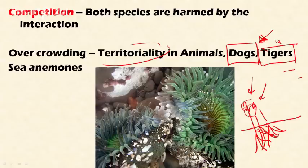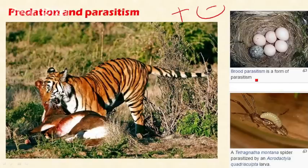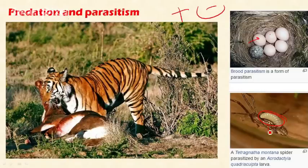Competition is also seen in sea animals, as shown in this figure. In predation and parasitism, one species benefits and another is harmed. An example is a tiger predating on another organism. Brood parasitism is parasitism on eggs. Another example is the Tetragantha montana spider parasitized by Acrodactyla quadrascapula larvae — the larvae parasitize the spider, illustrating parasitism.